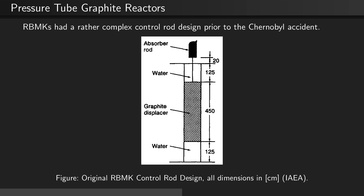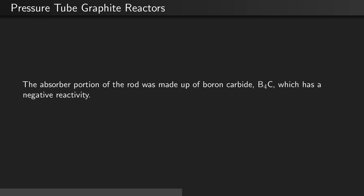RBMKs had a rather complex control rod design prior to the Chernobyl accident. As can be seen in this figure, the top part of the rod was an absorber sub-rod. Below this was a water portion, and below that was a graphite moderator, and below that was another water portion. The absorber portion of the rod was made up of boron carbide, which has a negative reactivity.